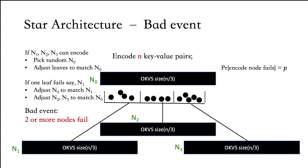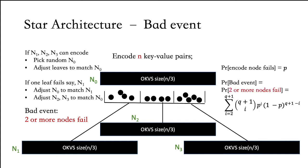So the bad event is when two or more nodes fail. If each individual node fails with probability p, then we compute the probability as the sum of events where more than two nodes fail, and this almost squares the failure probability.